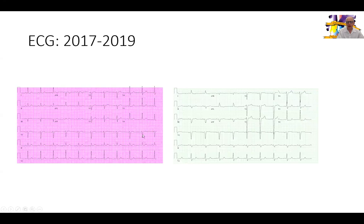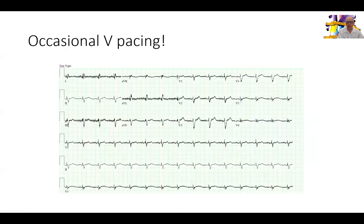This is her old EKG from 2017 on the left, and her current EKG on the right showing the left bundle branch block with an otherwise normal PR interval. Obviously she was not using her pacemaker on this EKG. However, at certain points she was getting occasional pacing — this EKG shows A-sensing and V-pacing, as nicely illustrated here.